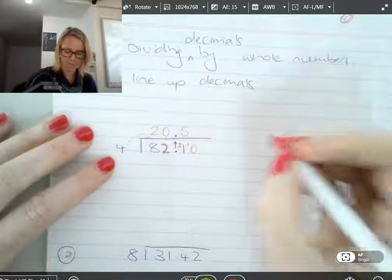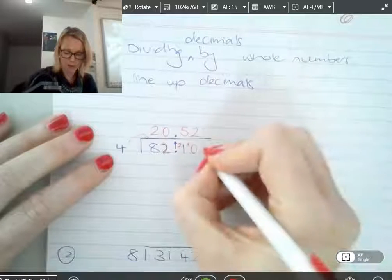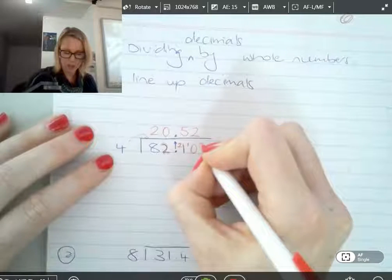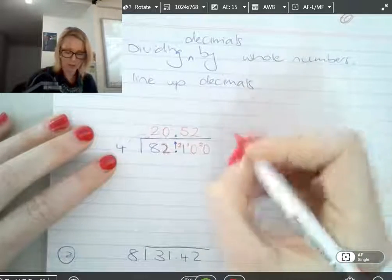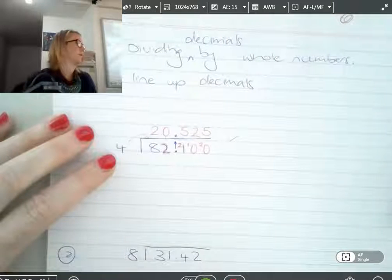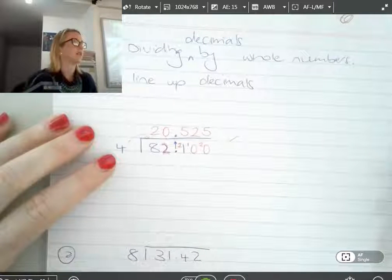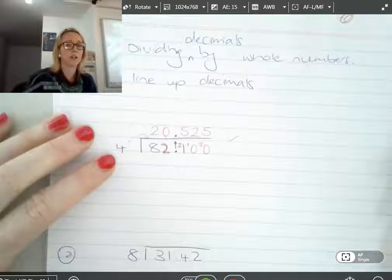So 4 into 10. Twice. With how many left over? 2. So I put my 2 here. Add a 0 to make it 20. 4 goes into 20. 5 times. All right. That's it. Awesome. That's all there is to it. All you have to do is line up the decimals.